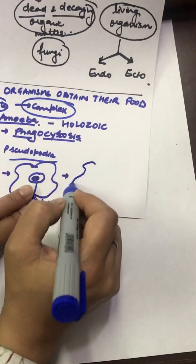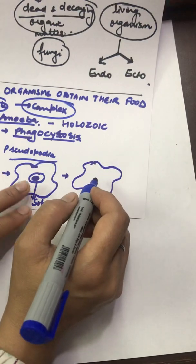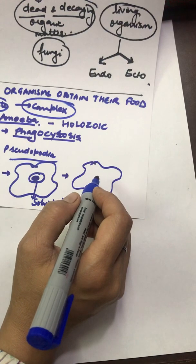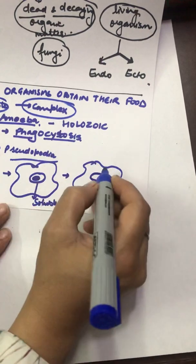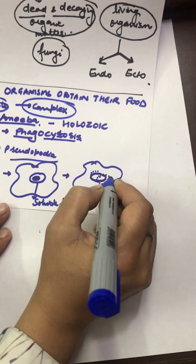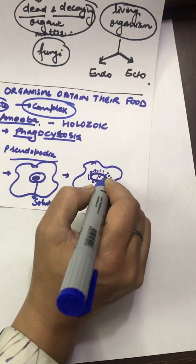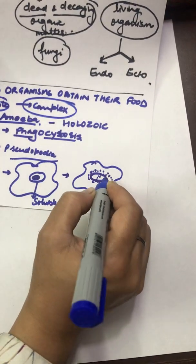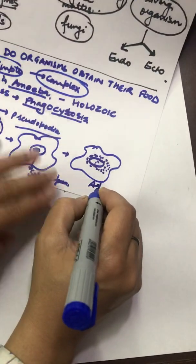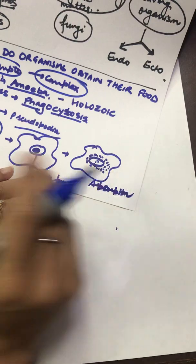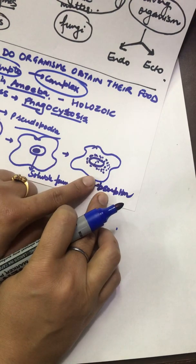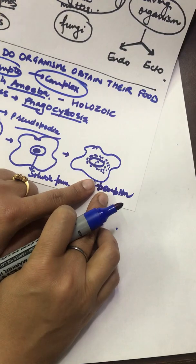The third step is absorption. In this process, the digested simple and available food moves to all parts of the cytoplasm — it passes out of the food vacuole and moves into the cytoplasm. This process is called absorption.